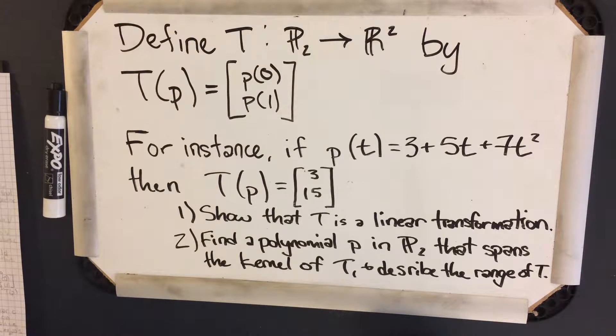And for instance, if p(t) equals 3 plus 5t plus 7t², then T(p) equals 3, 15.